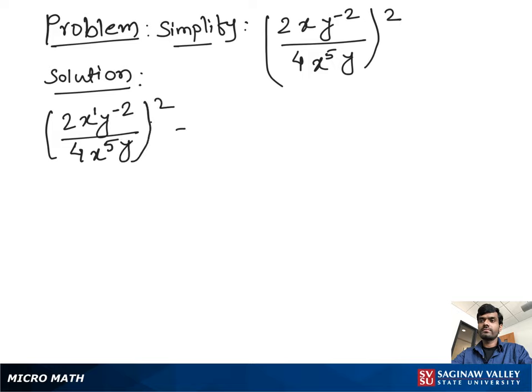First we do inside the parenthesis. So 2 divided by 4 which is 1 over 2, and x^1 divided by x^5. We can solve 1 minus 5 which is equal to negative 4.